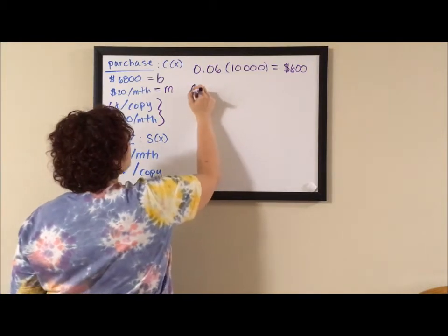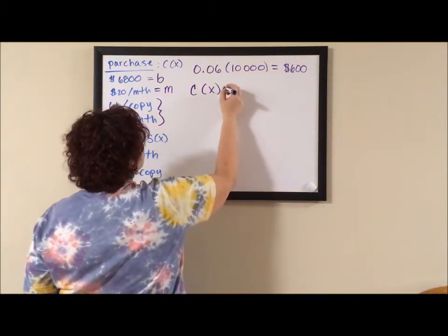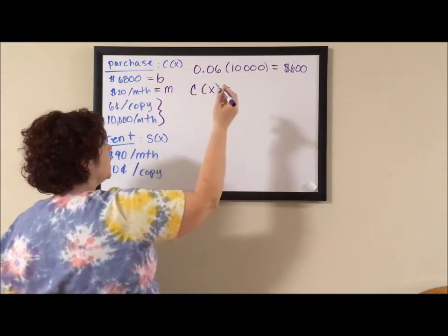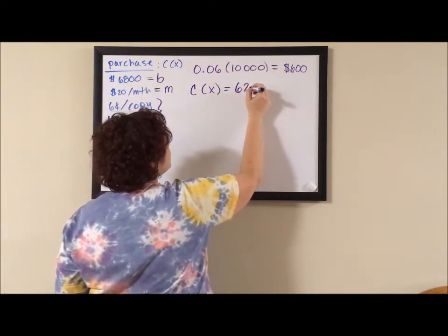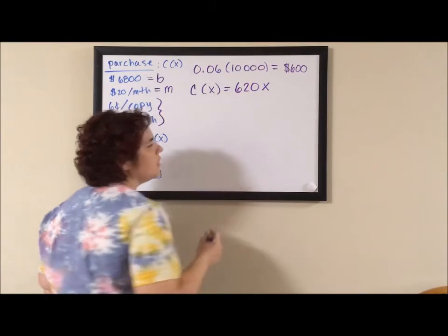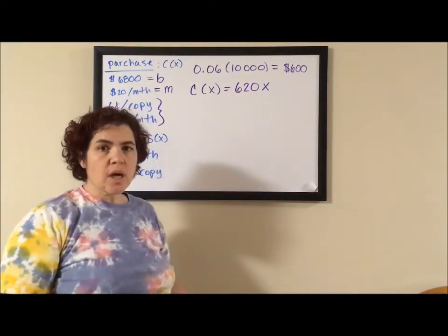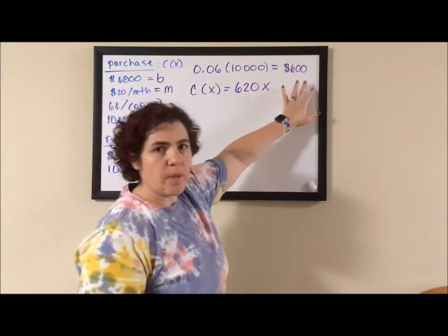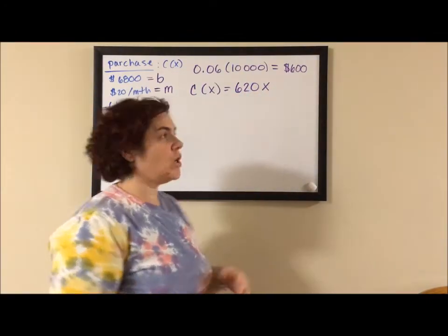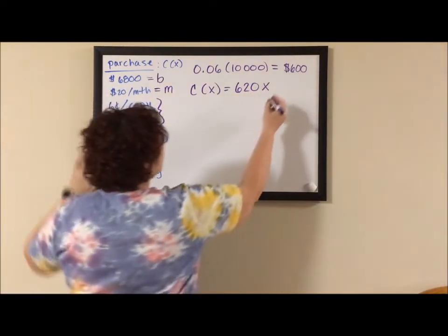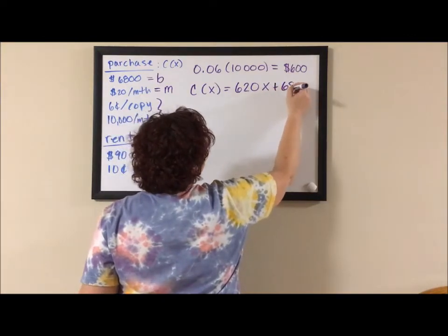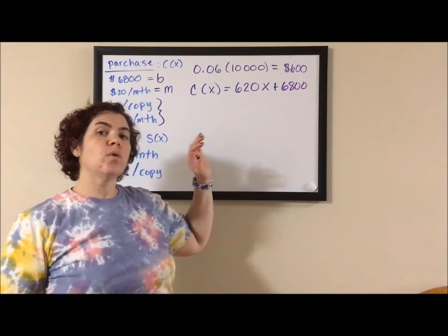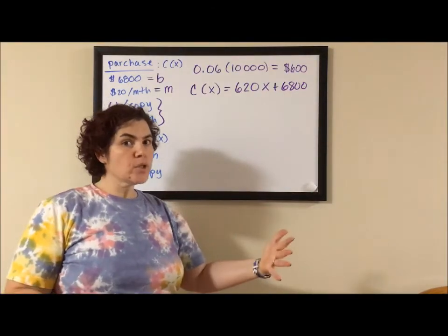So the cost is the $600 a month plus the $20 a month, and ends up being $620 a month, even when you purchase the copier, because you're paying for all of these copies as well as the service charge. Then you need to add on the one-time fee of buying the copier, and here we now have a model for what it would cost to purchase the copier.